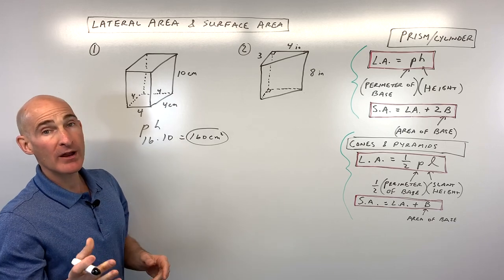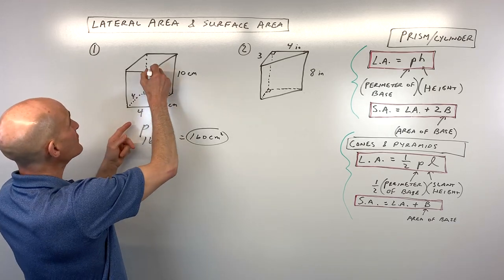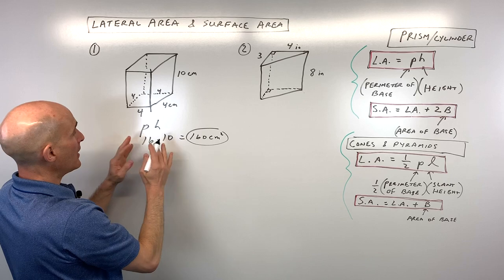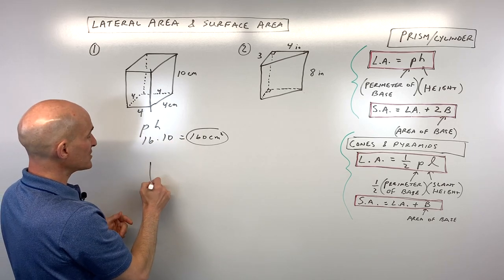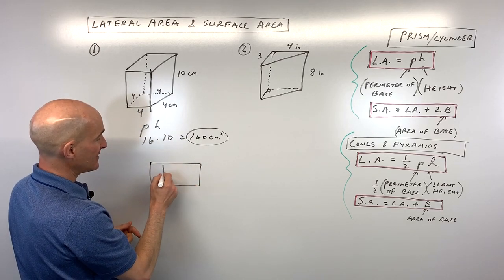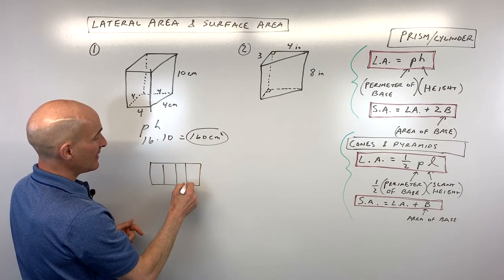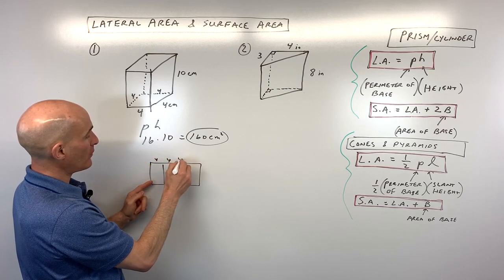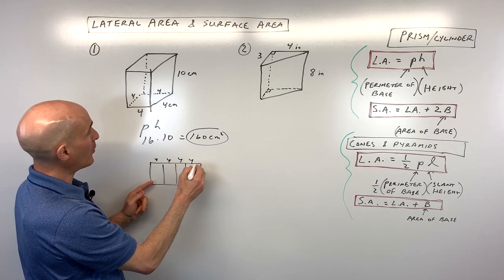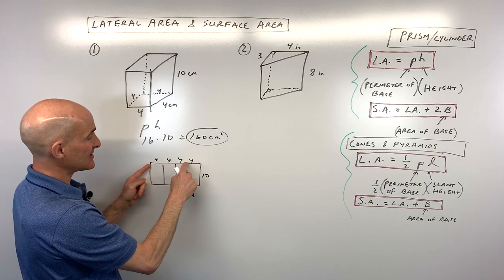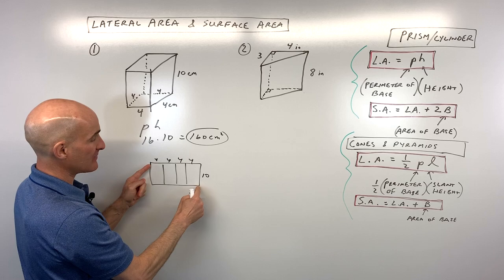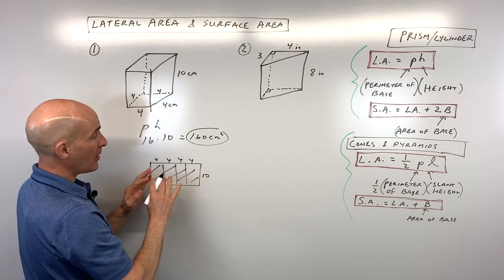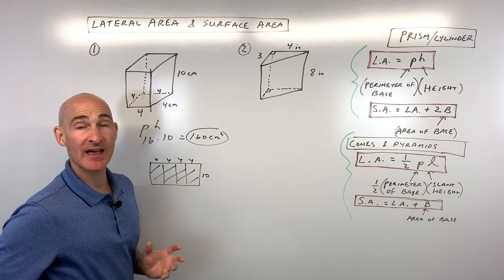For a visual, imagine cutting the prism and unfolding it — this is called a net. You'd see four sides each of length four with a height of 10, confirming that 16 times 10 gives you the lateral area of 160 centimeters squared.